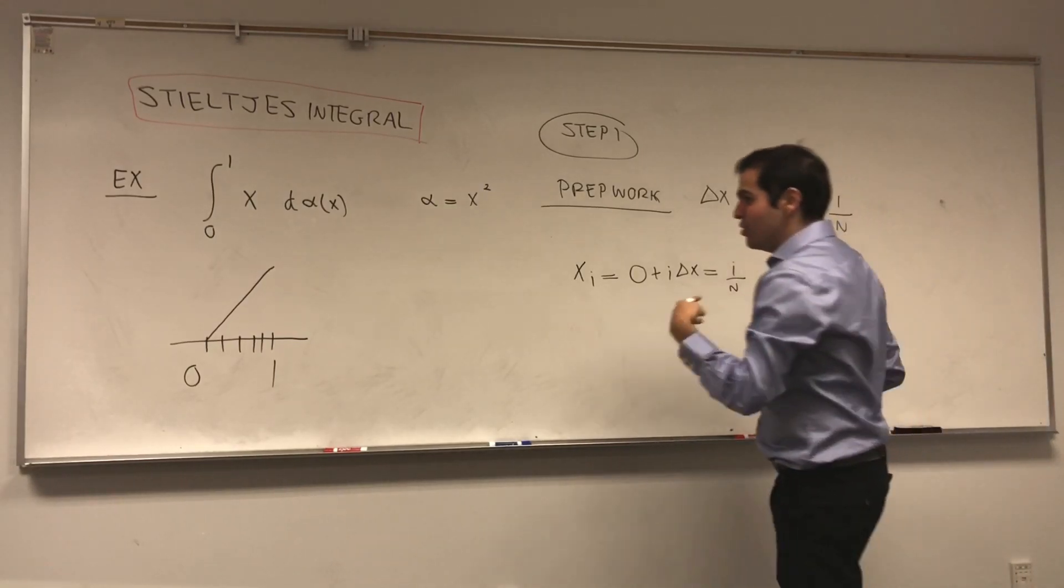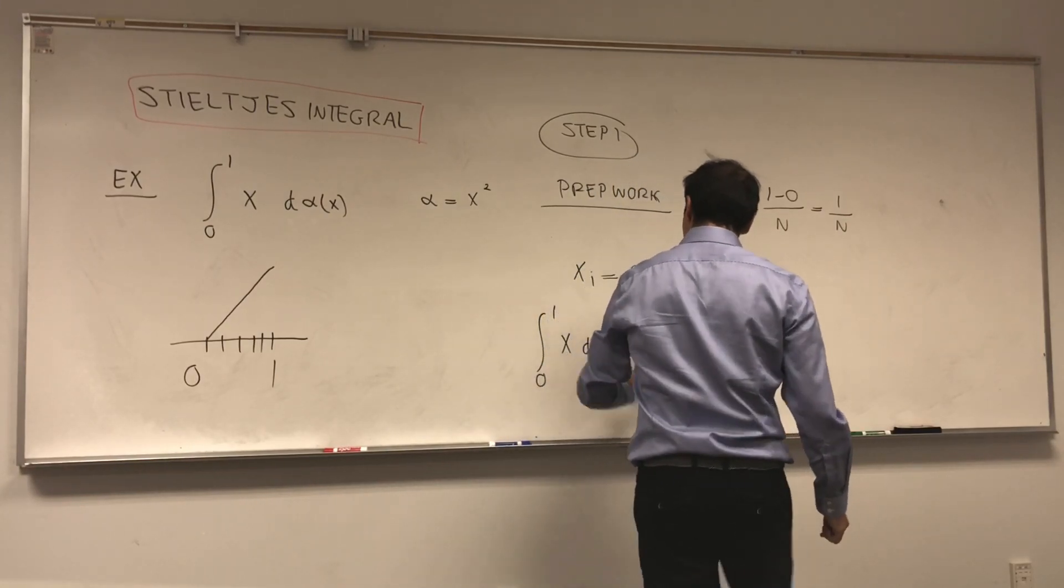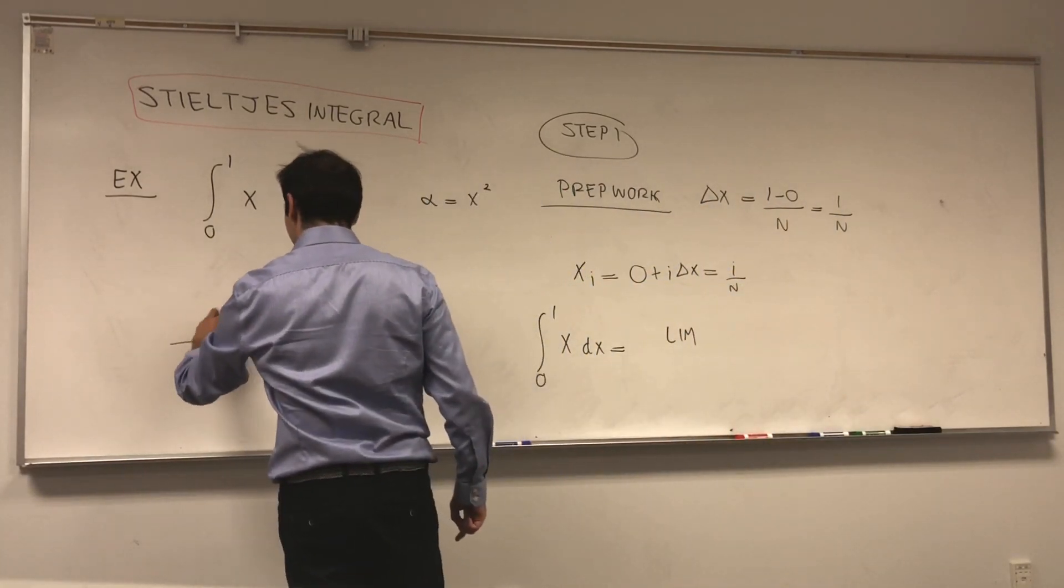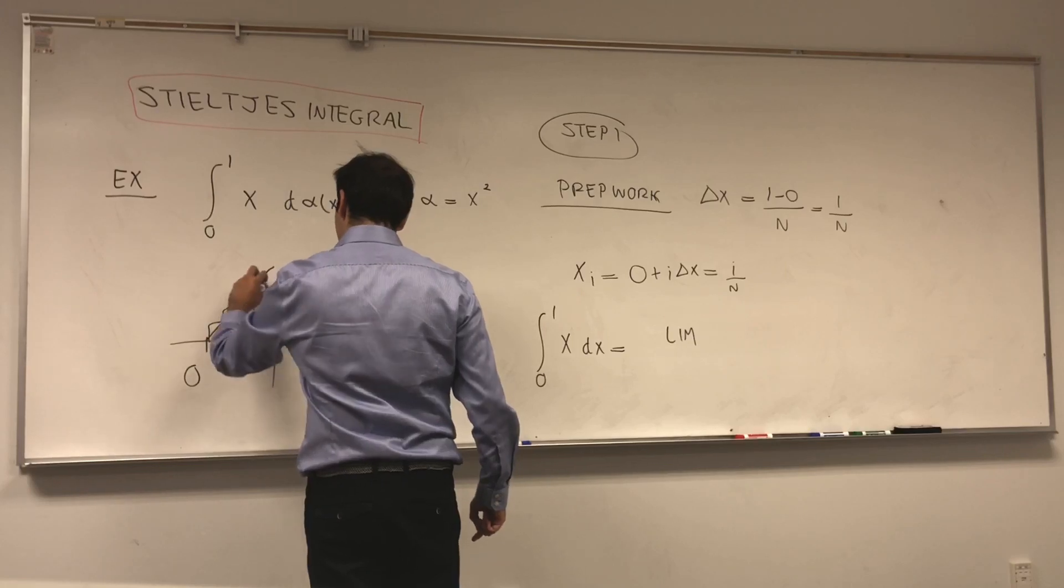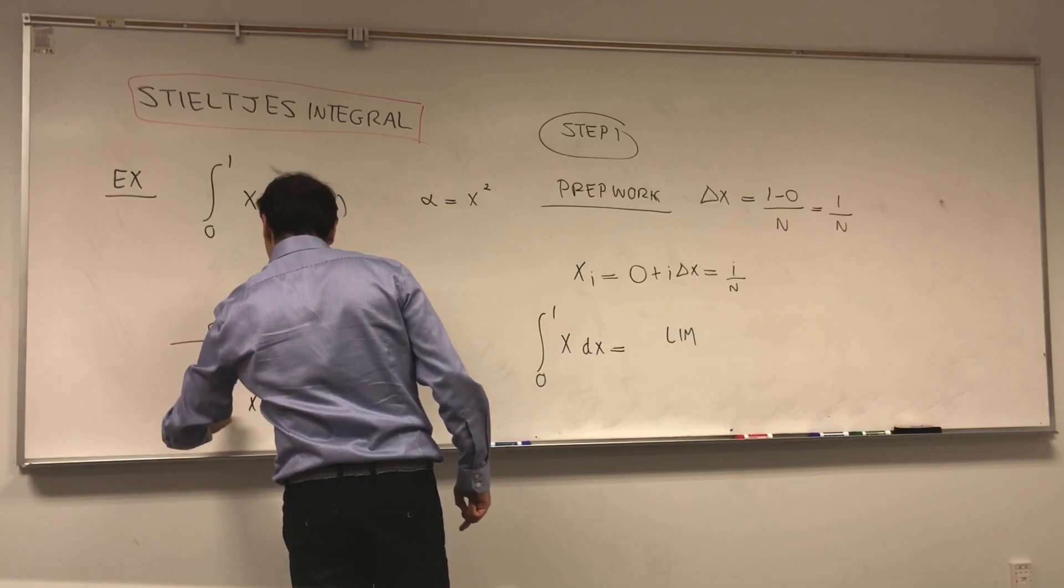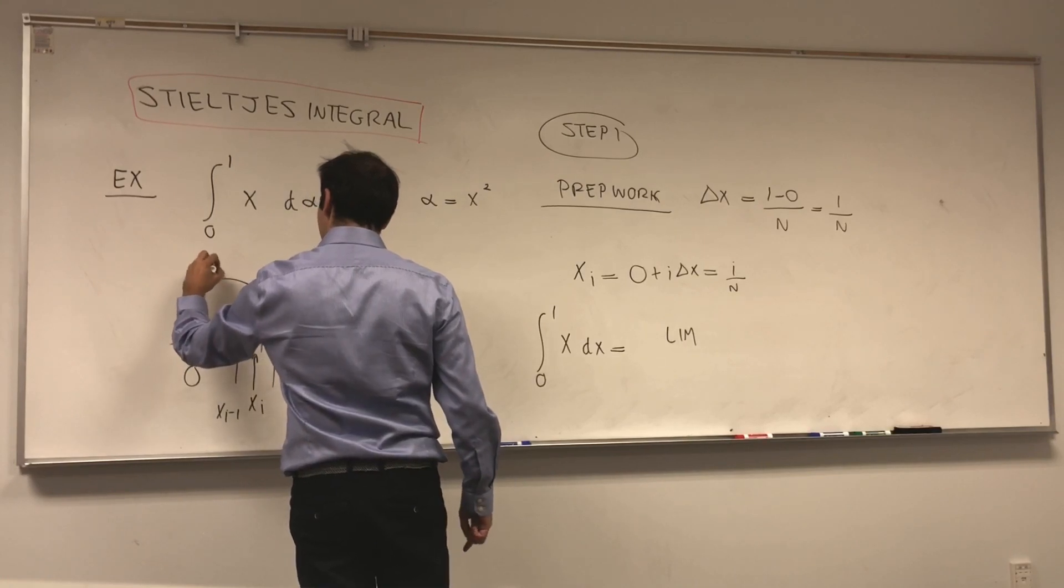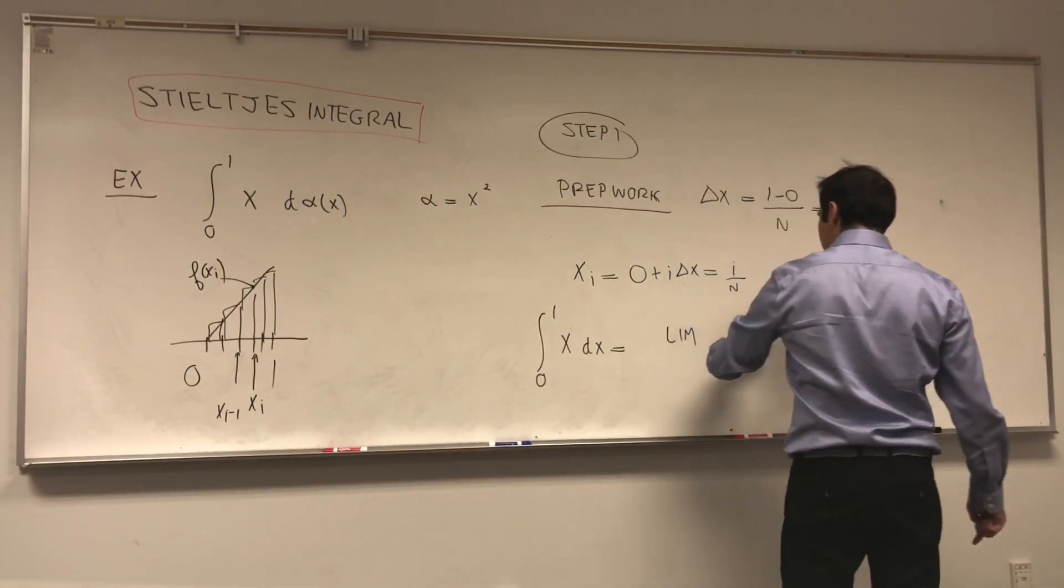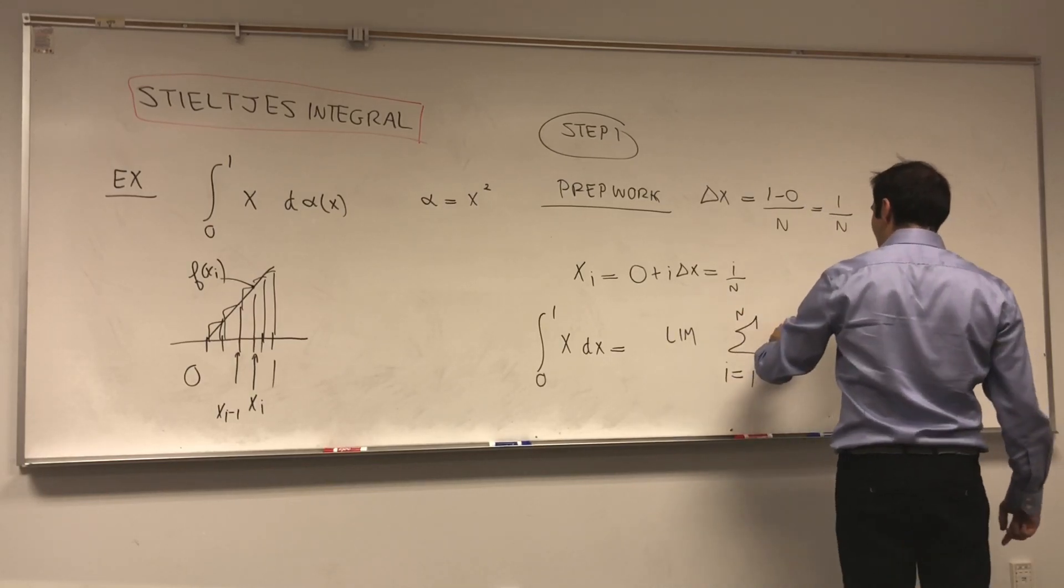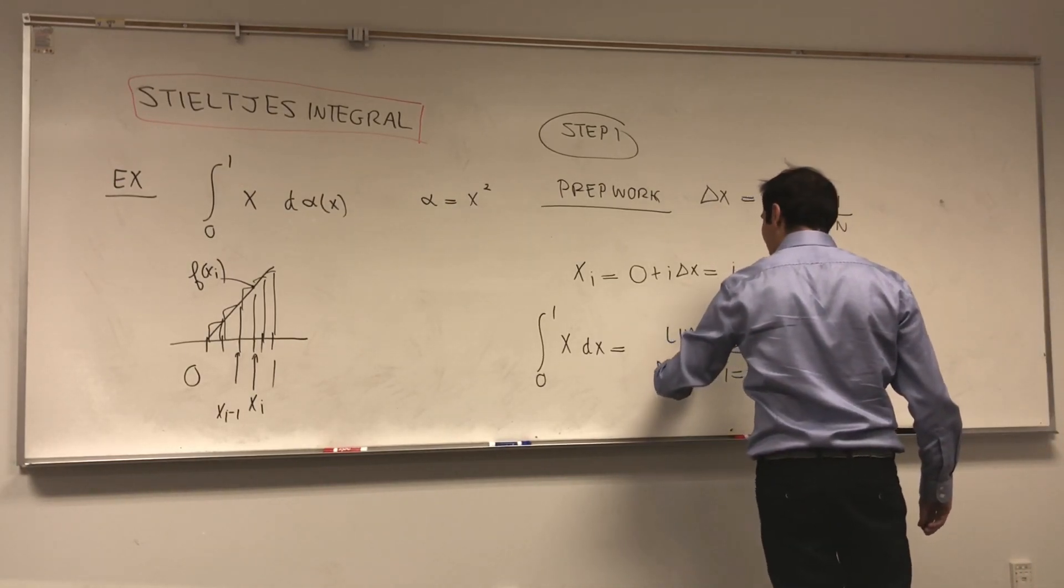And then, your Riemann integral, usually, integral from 0 to 1 x dx, that's equal to the limit of the Riemann sums. So here you take the right point sums. Remember, this is if you want x_i, this is x_{i-1}, and this is your f of x_i. So what you do, you take your Riemann sums, sum from 1 to n of f of x_i delta x, and you take the limit as n goes to infinity.